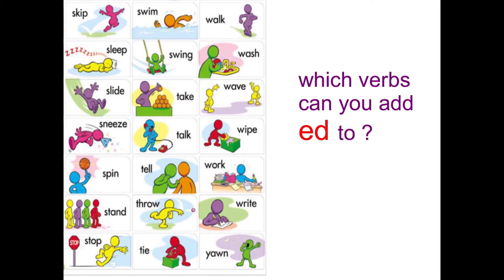We're going to start in the top corner. I was skipping to school - I skipped to school. So you can use -ed for skipped. What do you think you have to do to the P? Because it's a short I. Well done - you have to double the P. So it's skipped.